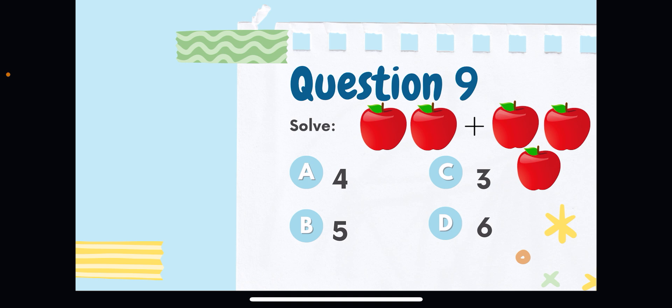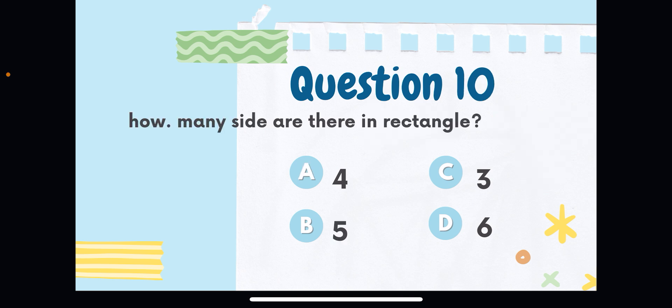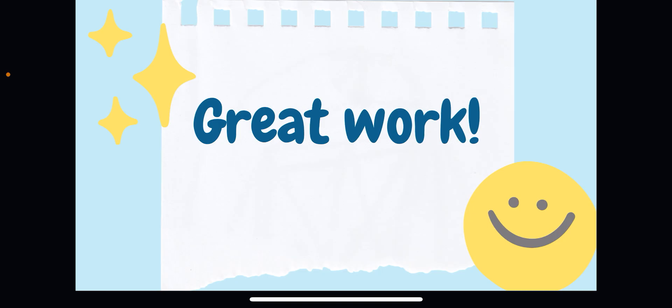The next question says: solve the given picture. You can see two apples on one side and three apples on the other side with a plus symbol in between. Two plus three equals five, so option B, five, is the answer. The following question asks how many sides a rectangle has. A rectangle has four sides, so option A, four, is the answer.